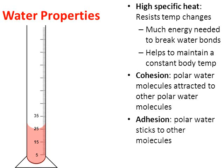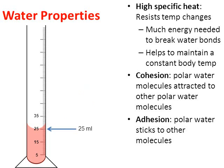The final water property I want to mention: because water is polar, water has what's called adhesion. Every year students will mix up cohesion and adhesion — cohesion is where water sticks to water. Adhesion is where water sticks to things other than water. In this picture we have a red liquid filled into a graduated cylinder. You might notice there's a little dip in the liquid level — this dip is called the meniscus. If you're reading a graduated cylinder, you read the bottom of the meniscus, in this example where it says 25 milliliters, not the top at 29 milliliters. So there's 25 milliliters of that red liquid.